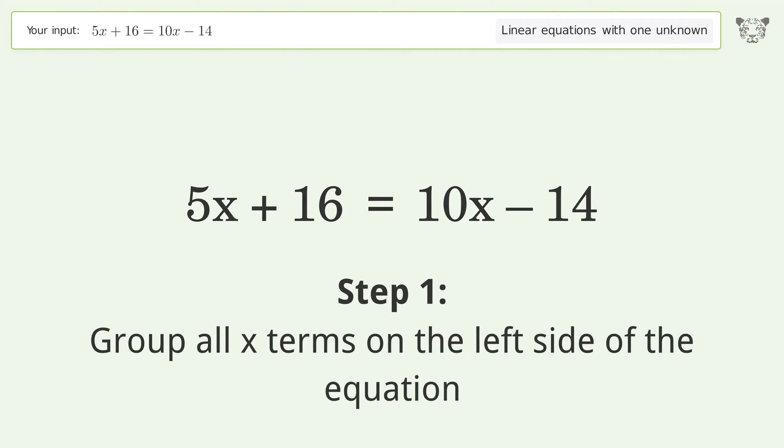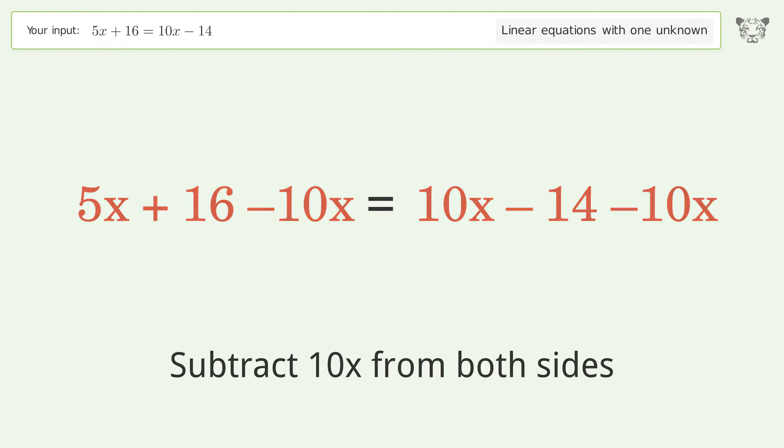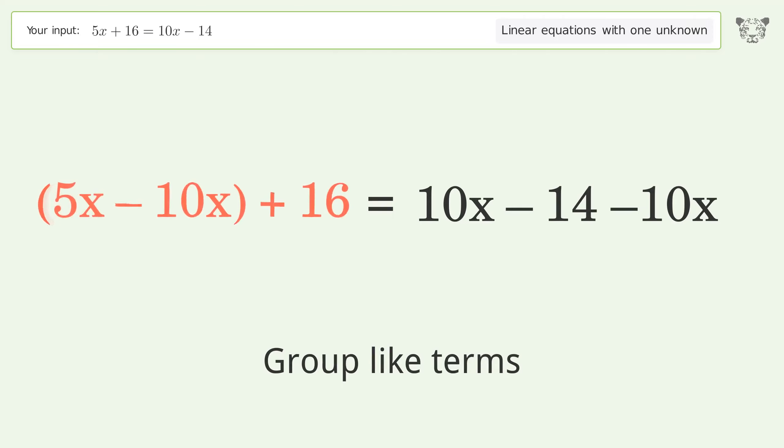Group all x terms on the left side of the equation. Subtract 10x from both sides. Group like terms. Simplify the arithmetic.